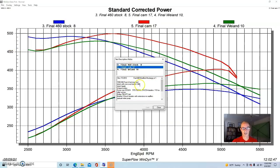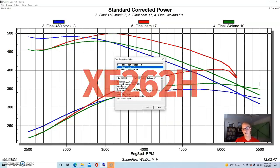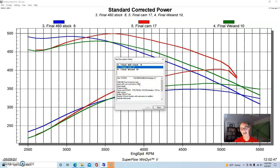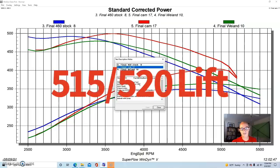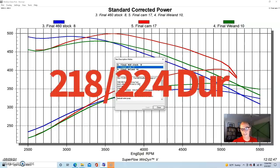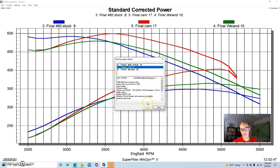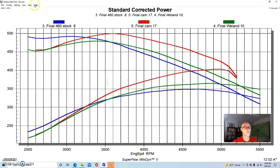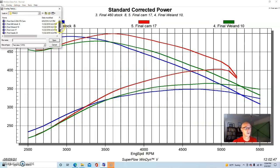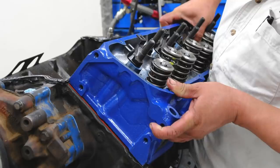Anyway, so it's going to be smaller, but it was a 515-520 lift, a 218-224 degree duration, and 110 degree lobe separation angle. But here's what happened after we installed the reworked 460 heads - we saw a fairly big jump in power all the way up to 437 horsepower.